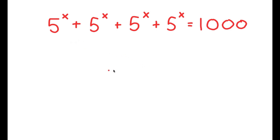So in this problem, I have 5 to the power of x plus 5 to the power of x plus 5 to the power of x plus 5 to the power of x is equal to 1000.